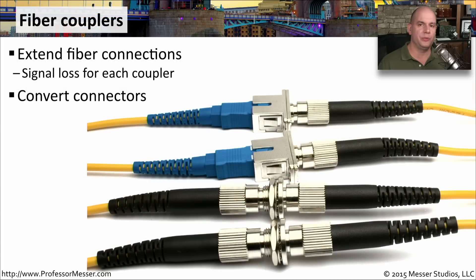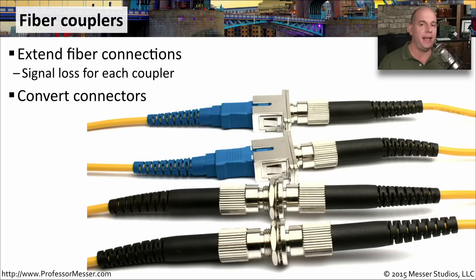One of the challenges with fiber is you don't often have a say in what type of connector is going to be on your infrastructure equipment. You may be connecting an SC to an LC, and because of that, you may have to have a different type of connector on the end of your fiber, and you somehow need to connect those two together. In those cases, it's common to use something like a fiber coupler.